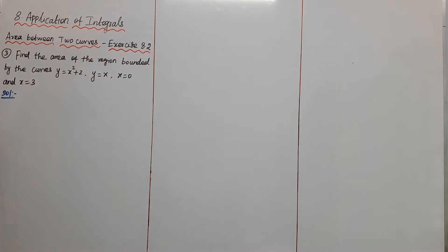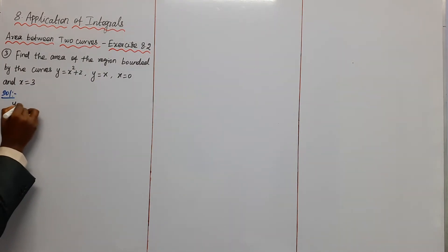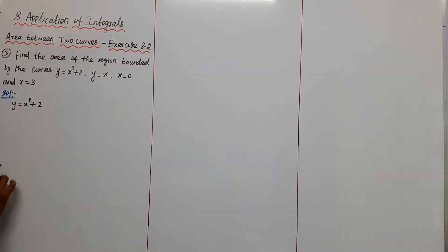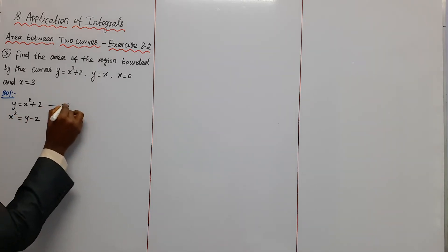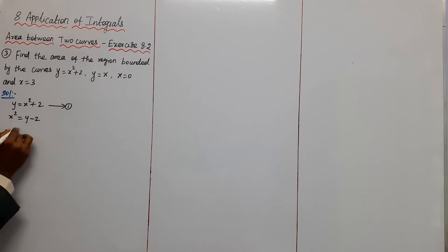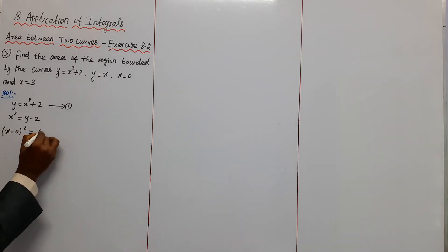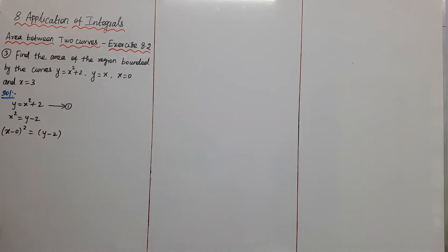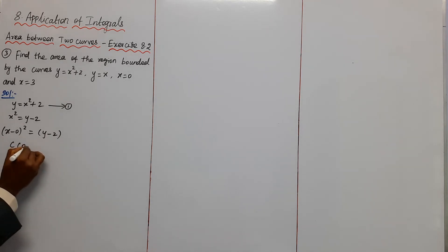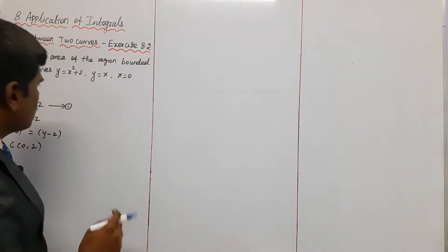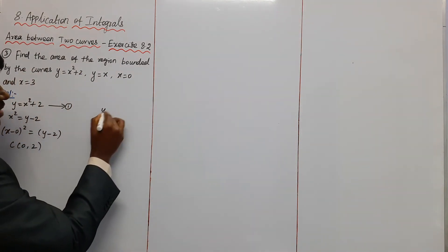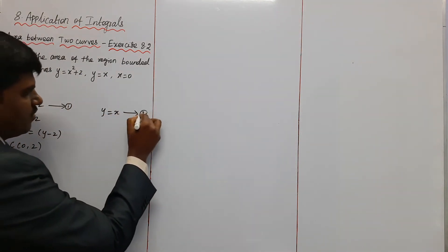From the given curve y = x² + 2, we get x² = y - 2, which we call Equation 1. This means (x - 0)² = (y - 2), so the center point is (0, 2). The second equation is y = x, which we call Equation 2.